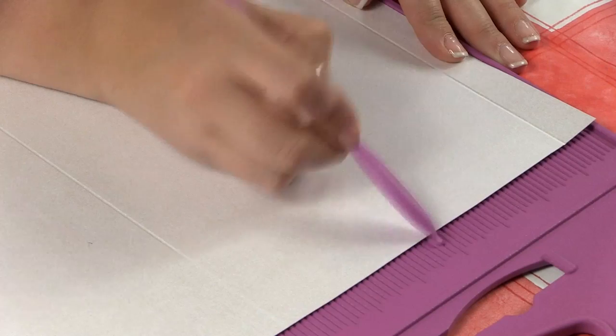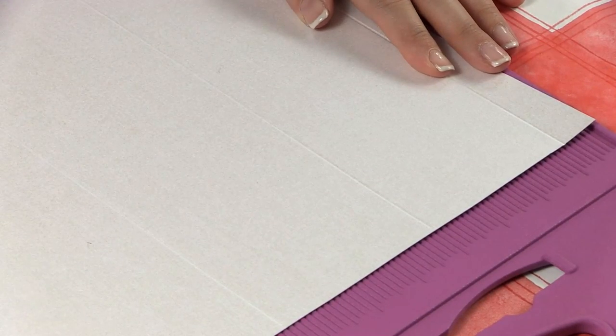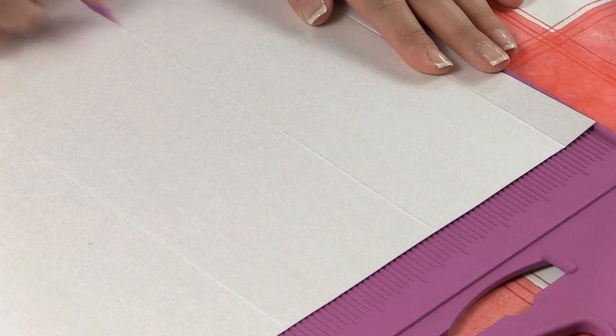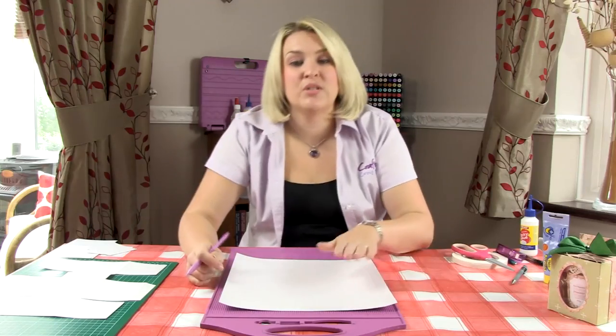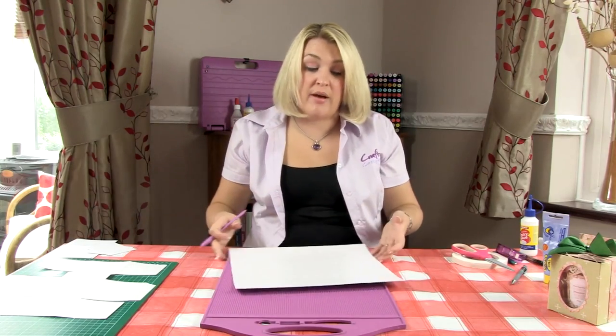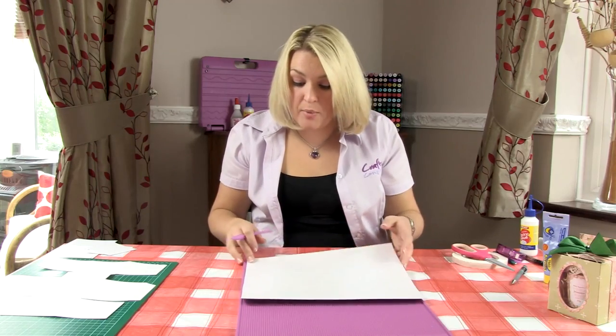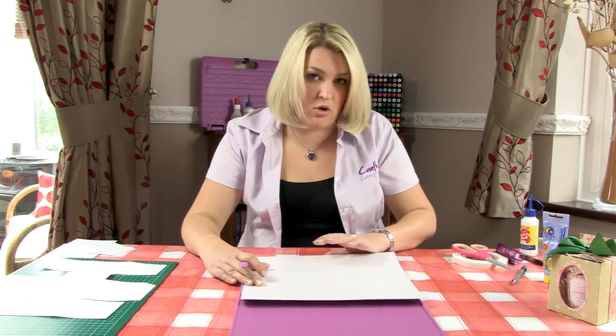Turn it right around, do the same again. We're going to go three quarters of an inch and then four inches. That was on box lid. Now what we're going to do is turn it round, push the board up a little bit, and we're going to start and use the box base score lines.